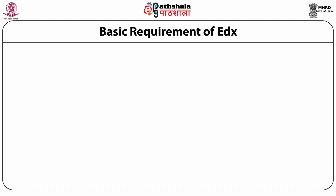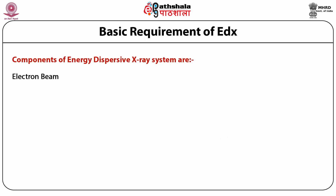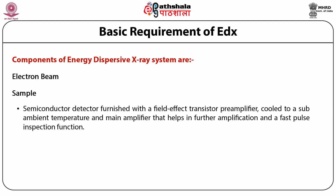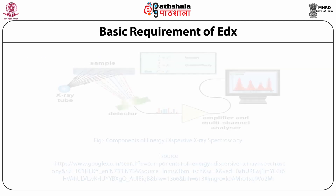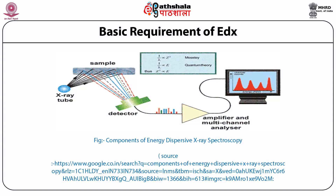The basic requirements of EDX include: an electron beam, the sample, a multi-channel analyzer, a semiconductor detector furnished with a field-effect transistor pre-amplifier cooled to sub-ambient temperature, and a main amplifier that helps in further amplification and fast pulse inspection. All these parts are controlled with a computer-assisted system like a multi-channel analyzer (MCA) or a computer-assisted x-ray analyzer (CXA). The diagram shows the x-ray tube, x-rays falling on the sample, reaching the detector, moving to the amplifier, and finally displaying results on the computer screen.